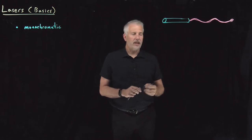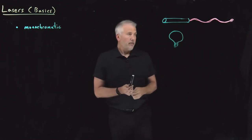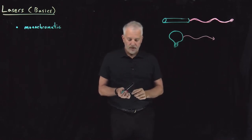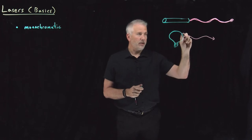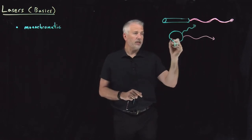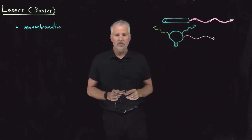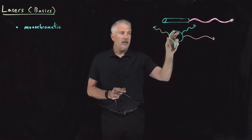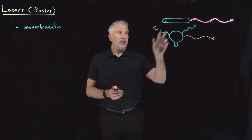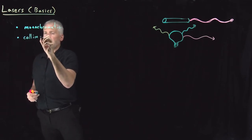That's completely different from a light source like a light bulb. Photons of a particular frequency might come out of a white light bulb, but in addition to those red photons you also get blue photons and photons of all sorts of different colors. So a light bulb is not a monochromatic light source — it's a polychromatic light source that gives off lots of different wavelengths of light.